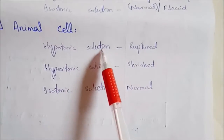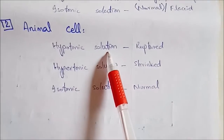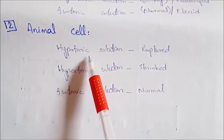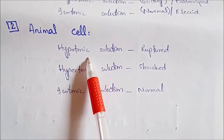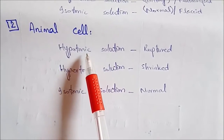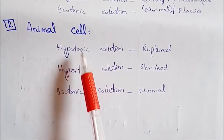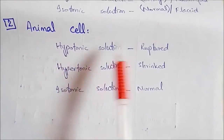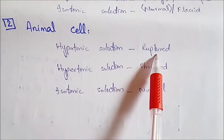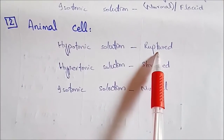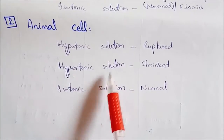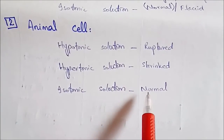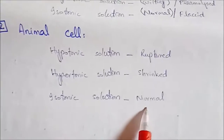Animal cells mein aapko pata hai cell membrane ke bahar cell wall nahi hoti. To agar aap animal cell ko hypotonic solution mein rakhen — kam gadhe solution mein — to paani solution mein se move karke cell ke andar jayega aur cell rupture ho jayega. Hypertonic solution mein rakhen to cell shrink ho jayega. Aur agar isotonic solution mein rakhen to cell normal rahega.